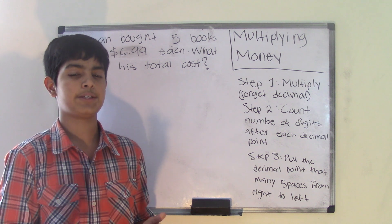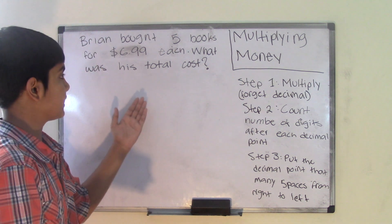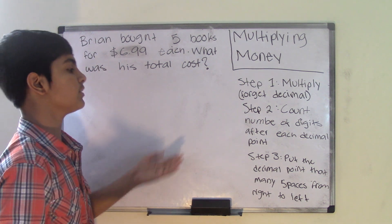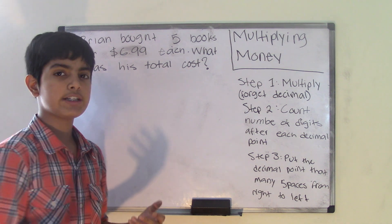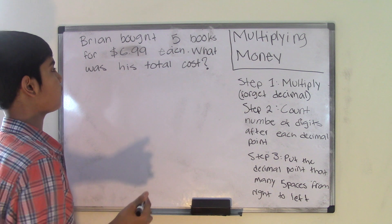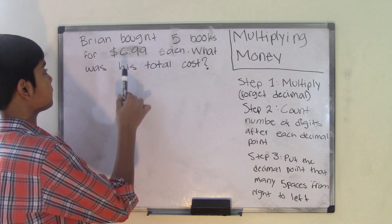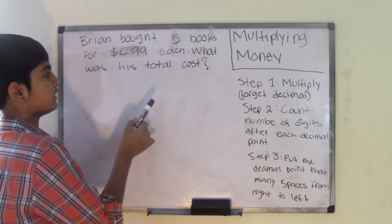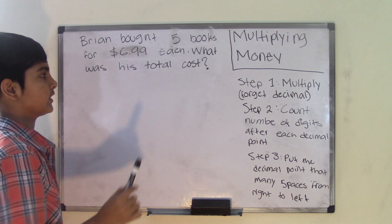In this topic I'll show you how to multiply money whenever you have word problems like this I have up on the board. Now I'm going to be using these three easy tips and they're really simple to follow. So let's say we have the word problem: Brian bought five books for $6.99 each. What was his total cost?